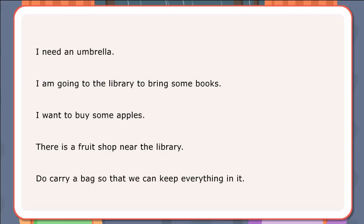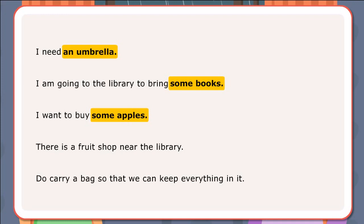Here are examples of sentences using a, an, and some. I need an umbrella. I am going to the library to bring some books. I want to buy some apples. There is a fruit shop near the library. Do carry a bag so that we can keep everything in it.